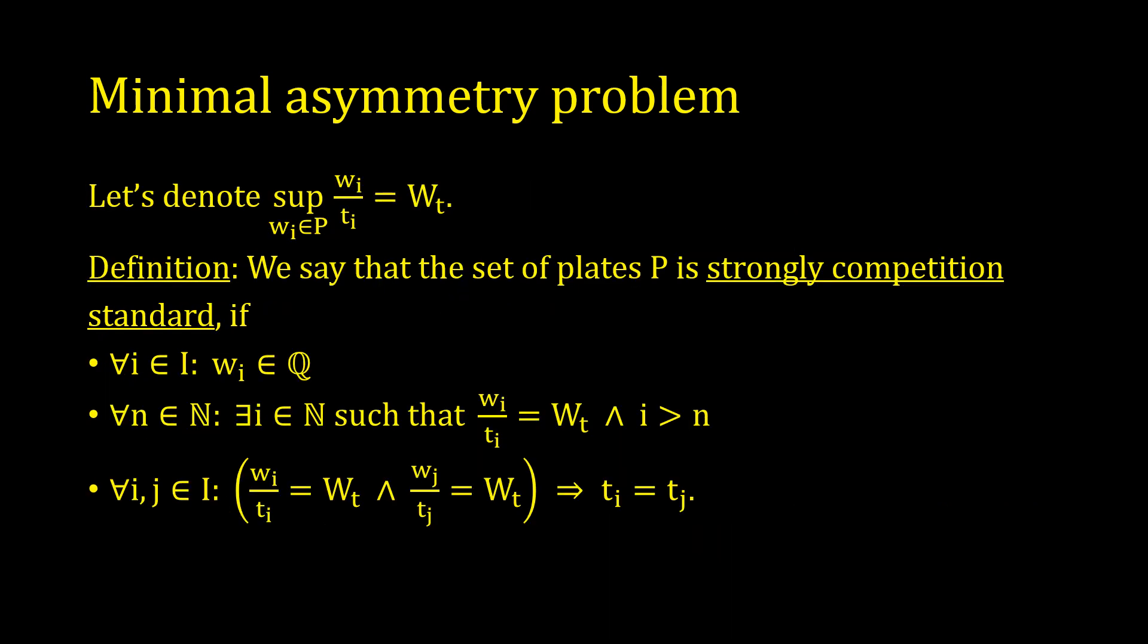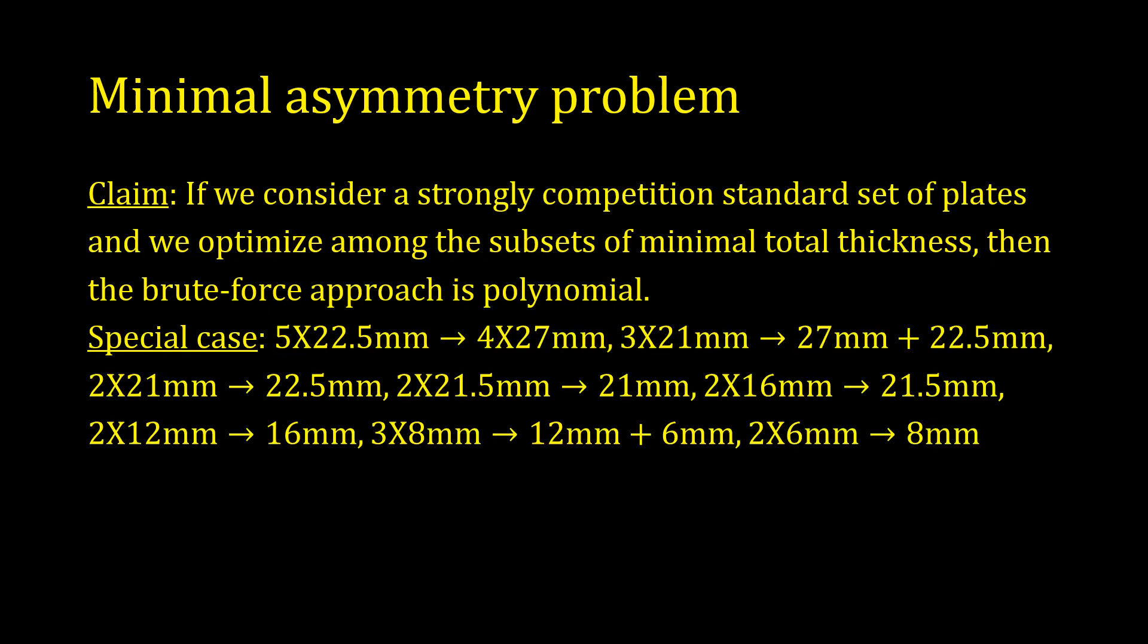Strong competition standardness requires infinitely many of the densest plates, and for them to have the same thickness. We can set the same upper bound in case of subsets with minimal total thickness. And that's because any set of the Rogue-calibrated KG steel plates with infinitely many 25s is strongly competition standard too.